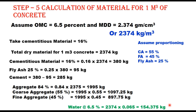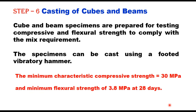Once material quantities are calculated, cube and beam specimens are prepared for testing compressive and flexural strength to comply with mix requirements. Specimens are compacted using a footed vibratory hammer and tested at 28 days. Minimum characteristic compressive strength should be 30 MPa and minimum flexural strength should be 3.8 MPa. If strength criteria are not met, cement content is increased and all steps from the compaction curve are repeated until both strength criteria are satisfied. Thickness of roller compacted concrete pavement is designed as per IRC SP 62.